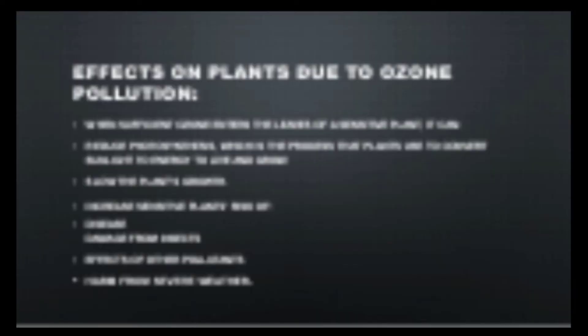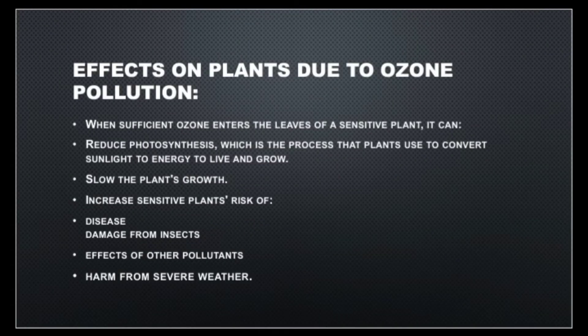Now we will discuss the effects of tropospheric ozone on plants. When sufficient ozone enters the leaves of a sensitive plant, it can reduce photosynthesis and impair other physiological and developmental processes. This results in retarded or stunted growth. These sensitive plants then become more vulnerable to diseases, damage from insects, effects of other pollutants, and harsh weather.